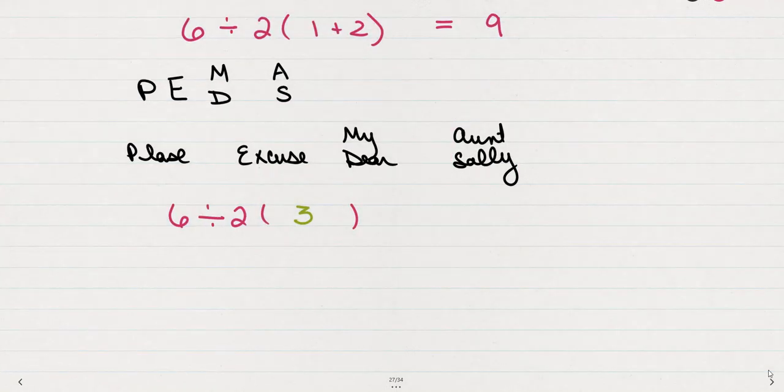If we were to do 6 divided by 2 times the quantity of 1 plus 2, everyone, nearly everyone gets this part that you've got to add first. The 1 and the 2 adds up to 3. But then when we do the multiplying first and get a 6 and then divide to get a 1, that's not correct because this divide came before the multiply.